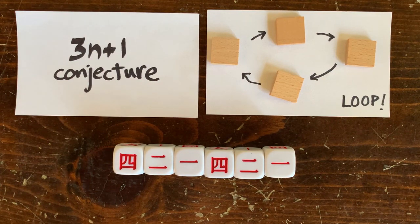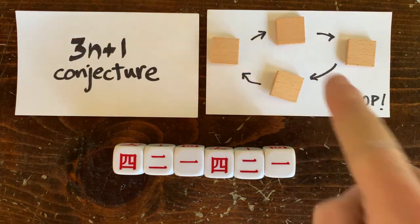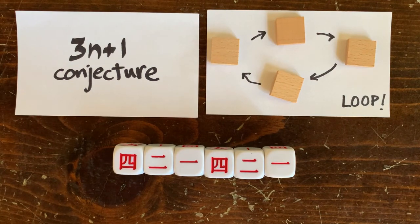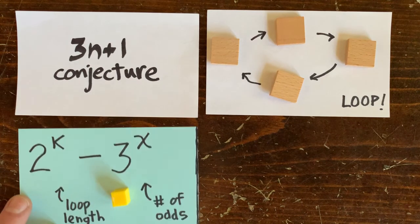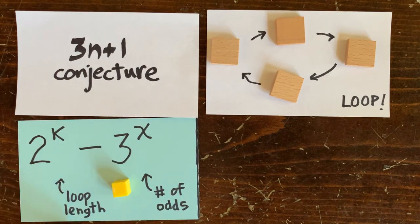Welcome back to the 3n plus 1 show. We're looking for a loop of numbers to disprove the 3n plus 1 conjecture. Luckily, we found a promising way to hunt for loops. We want to pick a good loop length k and a reasonable number x of odd numbers in that loop. Probably x will be around 63% of k.